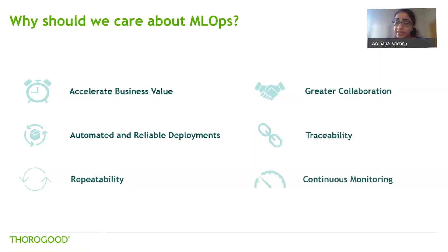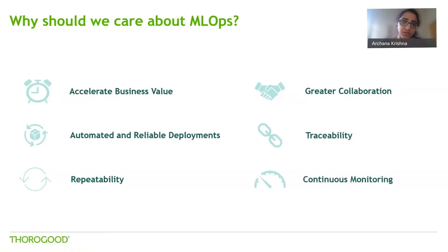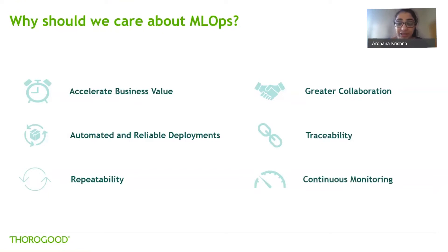Last but not least, building monitoring into the MLOps framework ensures that we're being proactive about mitigating risks. We can build in checks to flag if the model was unavailable for a period of time, if model performance is declining, or if there is increasing model bias. You can build in checks and balances to react to these issues, ensuring that the business isn't adversely affected and that you are being more proactive, responsive, and agile.